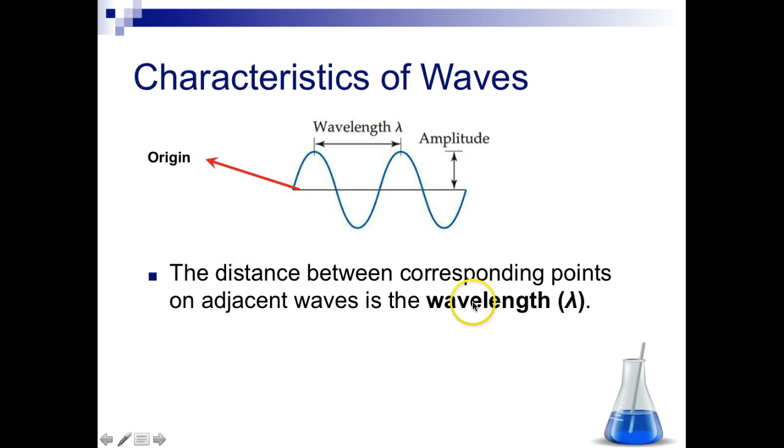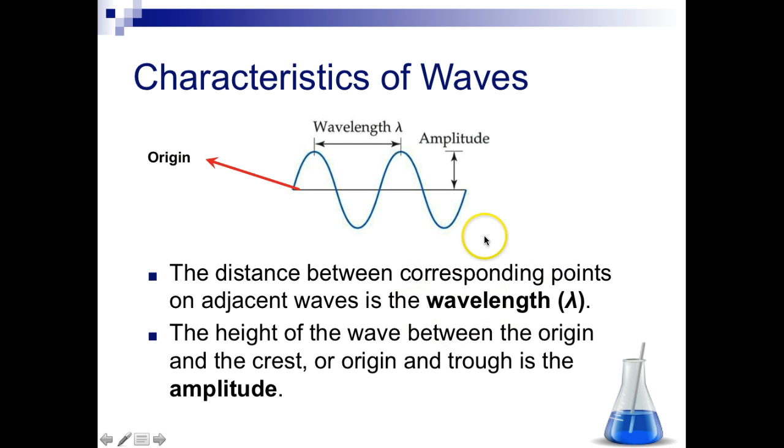So, like we said, the distance between two corresponding points on adjacent waves is the wavelength. The height of the wave between the origin and the crest, the crest is the top, or the origin and the trough, which is the bottom, is called the amplitude, so how high the wave is.